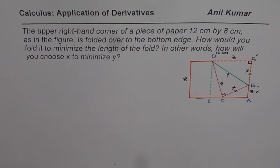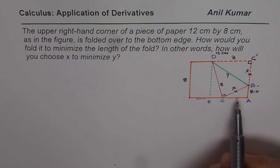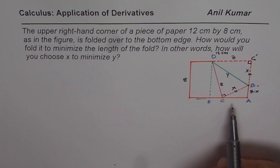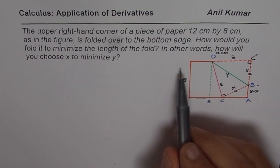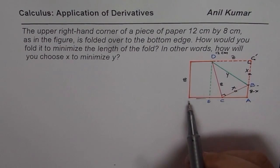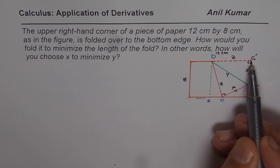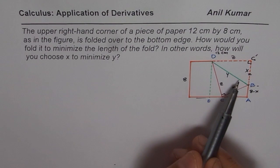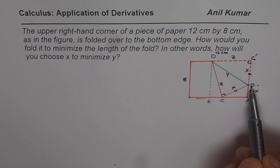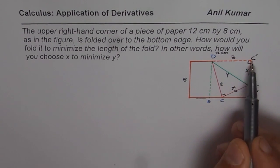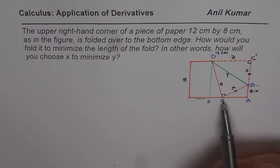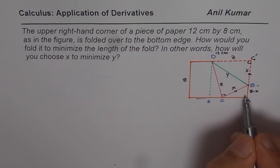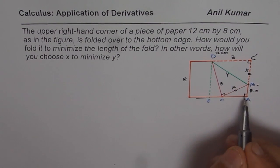You can pause the video, think over it, try to solve, and then look into my solution. Now this particular solution requires a lot of skills coming together. Let's begin by understanding the diagram itself. We have 12 by 8 cm of paper. The upper right hand corner has been folded to the bottom edge. C'B will overlap with BC, and C'D will overlap with DC. I have named them as Z, Y, and X. Since it is a rectangular piece, that is the right angle.